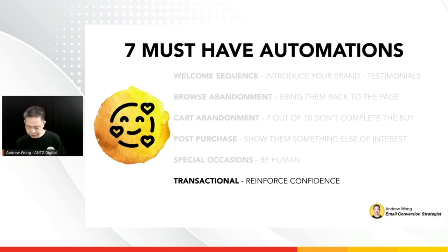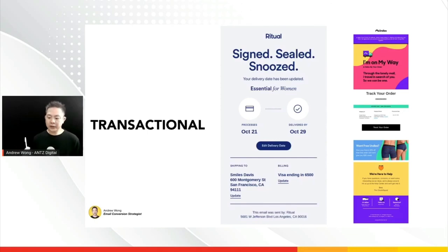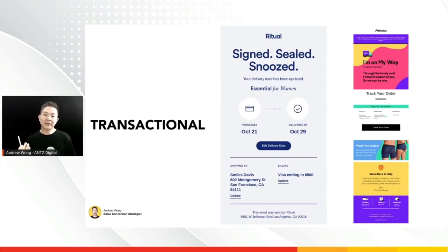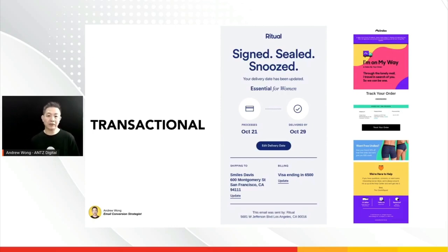Transactional emails reinforce confidence and prevent buyer's remorse. They build anticipation of the product being shipped. Every time we buy something, we want it immediately, and emails like these keep feeding that momentum so the customer keeps your product in mind. These are among the best times to send emails because recipients will definitely open shipping and order information. You can also add cross-sells or complementary products — another way to increase revenue with email marketing.